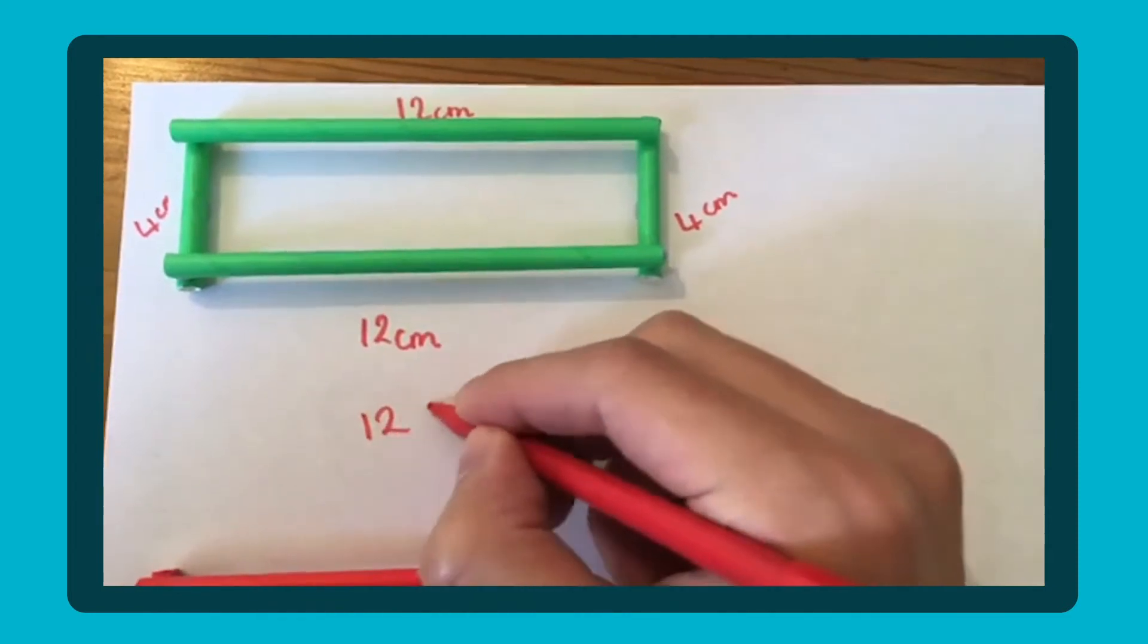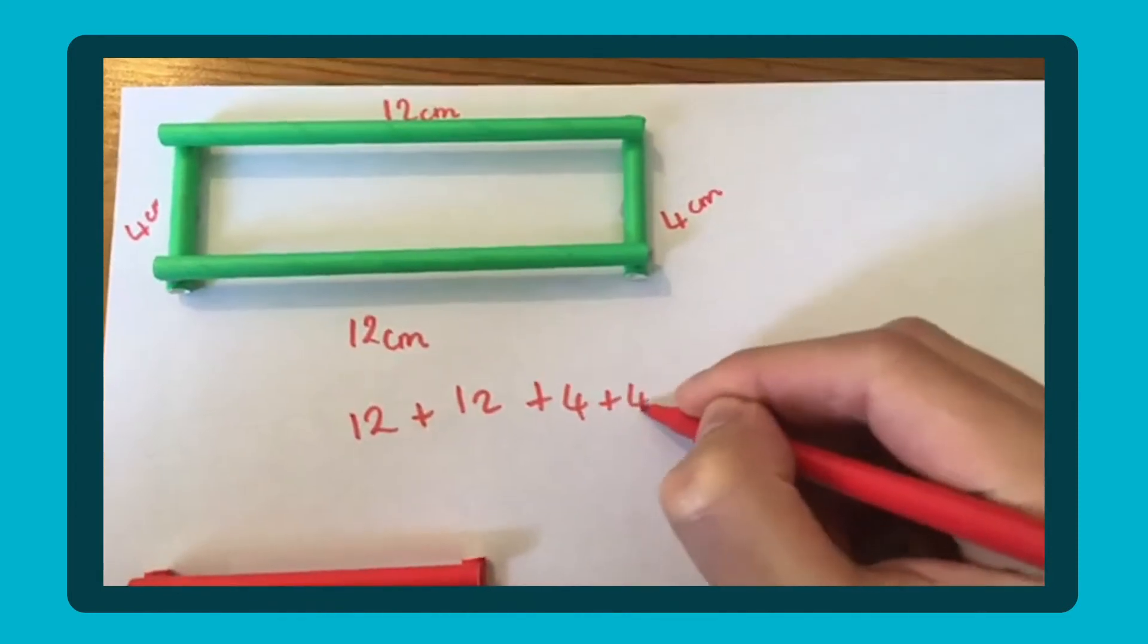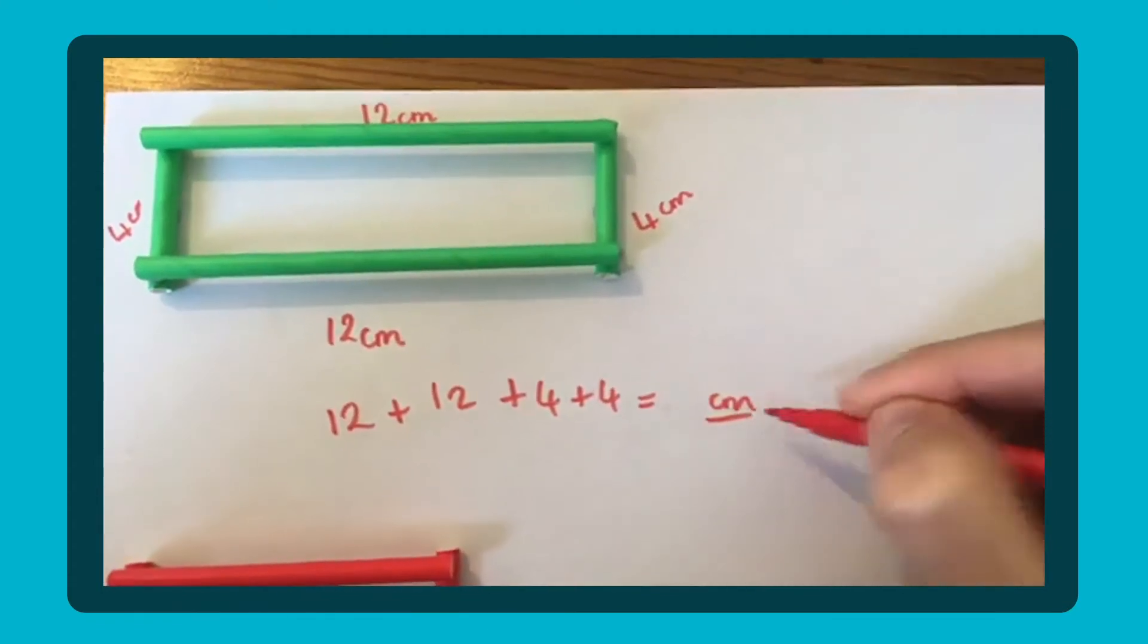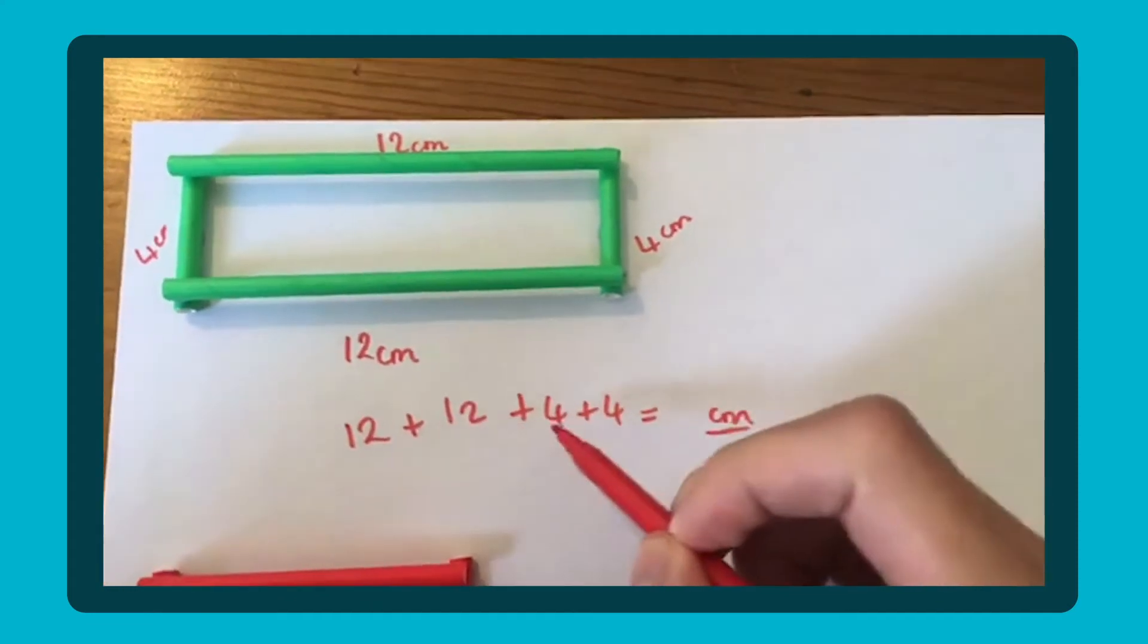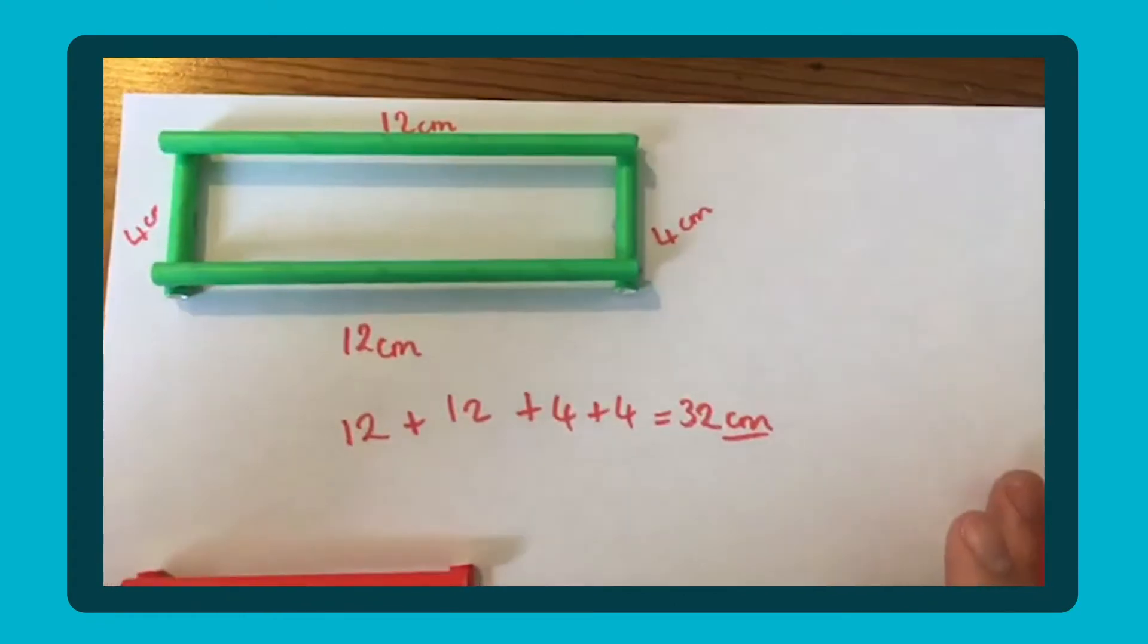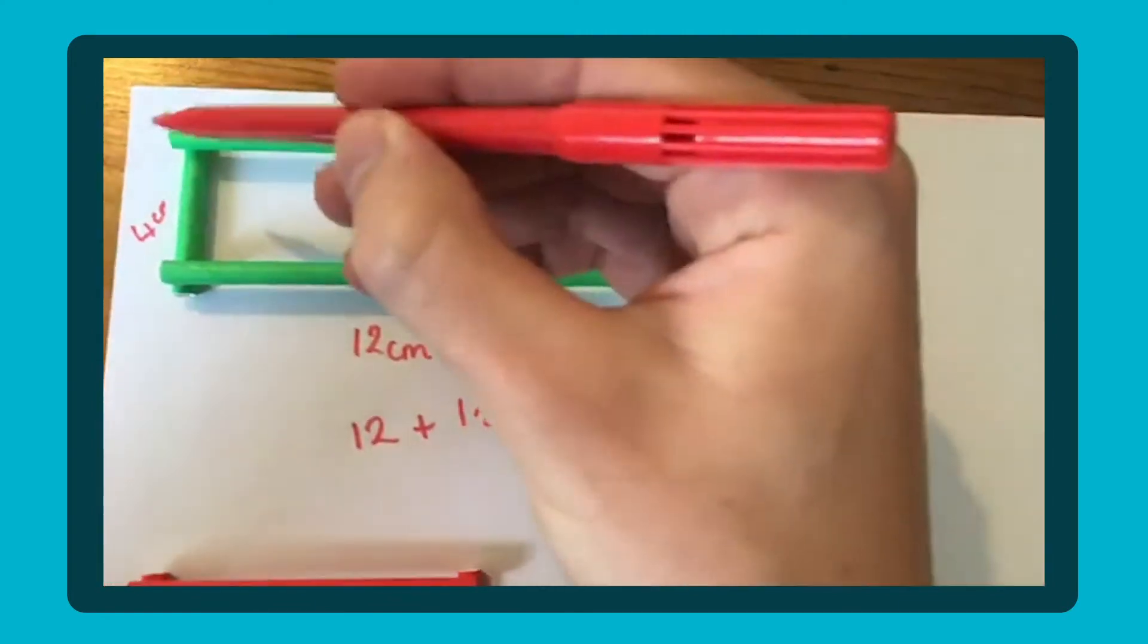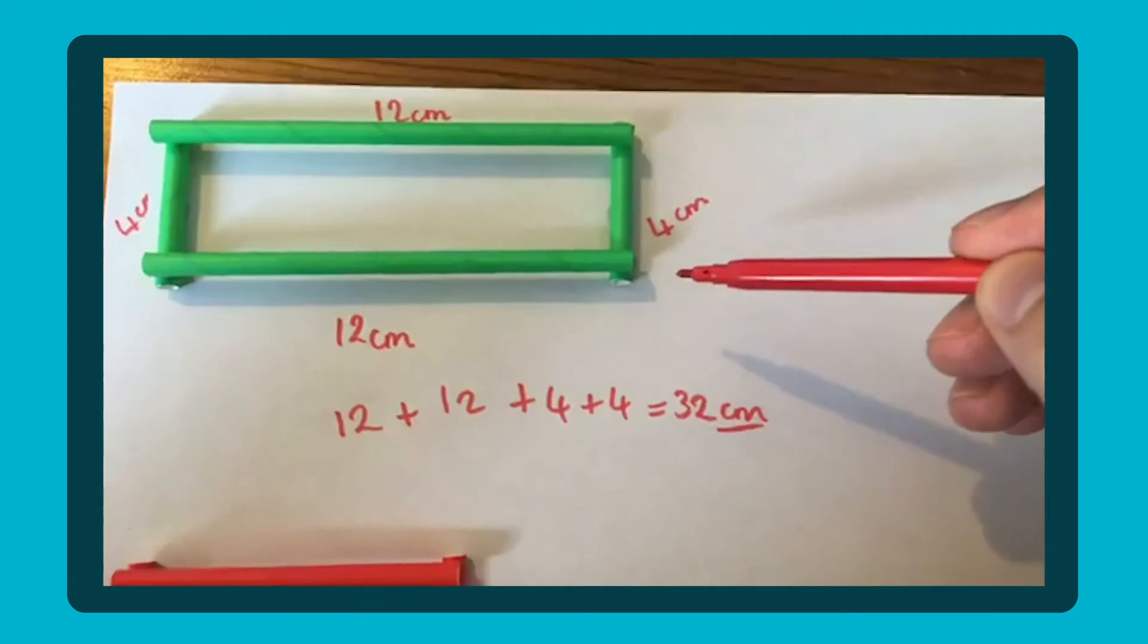So it would be in this case, 12 add 12 add 4 add 4. And then you put your answer in, making sure you have your answer in centimeters. So we've got 12, 24, and we've got 28 and 32. So the total perimeter for this shape here that you've built with straws is 32 centimeters because I've added up all those sides to get the distance around the outside of the shape.